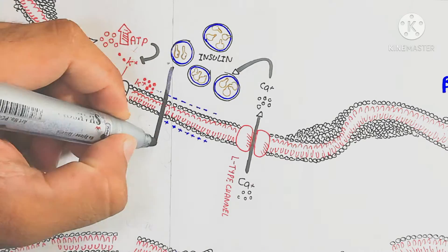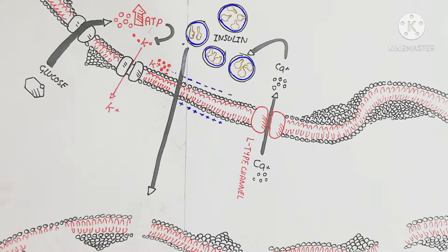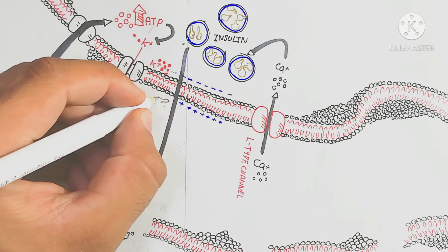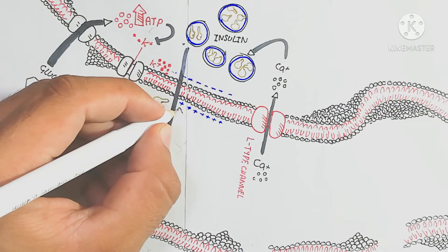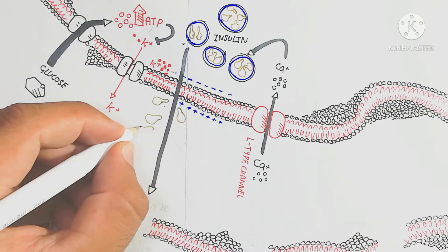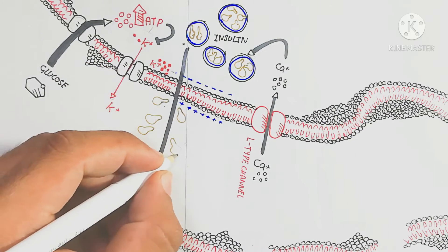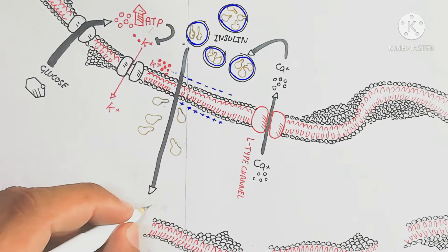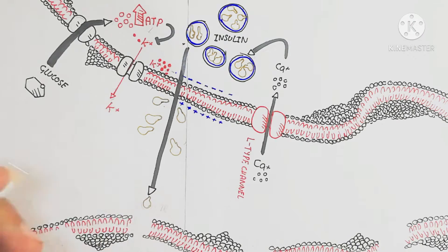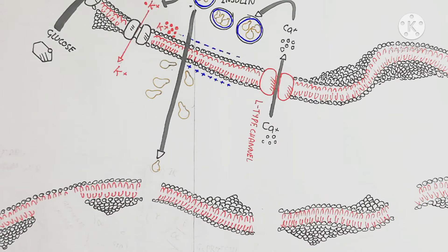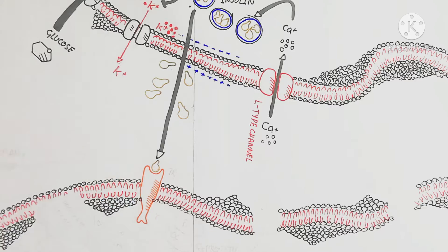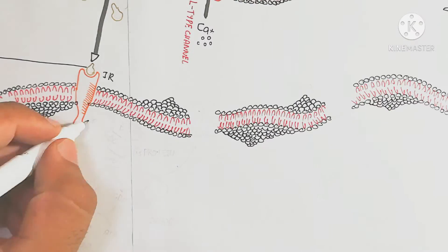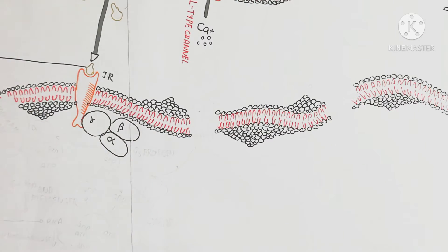Another mechanism is the gastrointestinal incretin pathway, which also promotes insulin secretion. This involves glucagon-like peptide produced from enteroendocrine cells, but we will not discuss that in detail here.